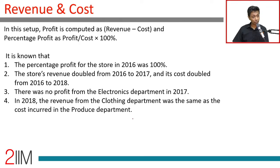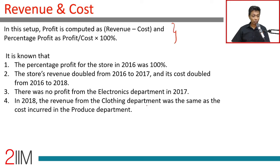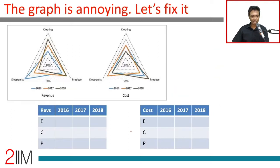Profit is computed as revenue minus cost. Percentage profit is profit divided by cost, multiplied by 100. The percentage profit for the store in 2016 was 100%, revenue doubled from 2016 to 2017, and cost doubled from 2016 to 2018. There was no profit from the electronics department in 2017. I'll look at the data first — I hate this graph, so I'm going to capture all the data.